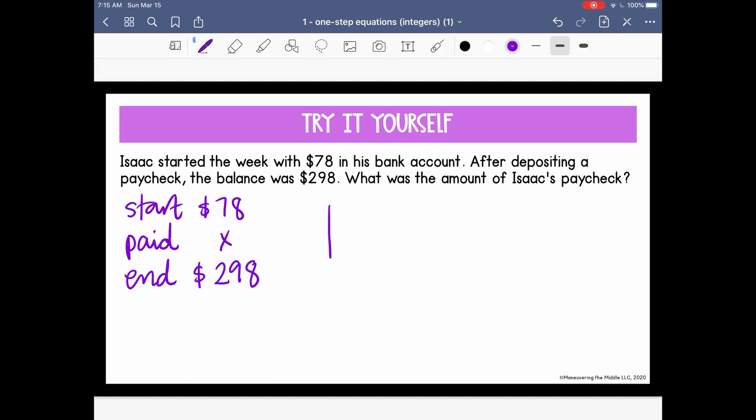So again, I like to draw my little picture, my model. And I know that at the end of the week, or our balance, what we're trying to get to is $298. And there are two things that are happening here. We are starting with $78 and then we're getting paid. And our job is to find out what that paycheck is. So now I can set up my equation: 78 + x = 298. And I want to isolate my variable. I'm going to move that 78. There's not a sign in front of it, but we know that's a positive. So we know we're going to subtract in order to balance our equation. And I'm going to end up with 220.